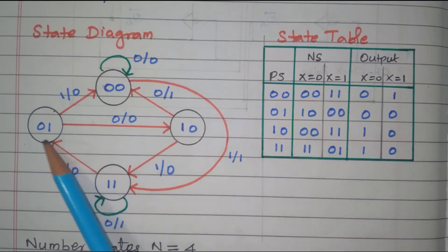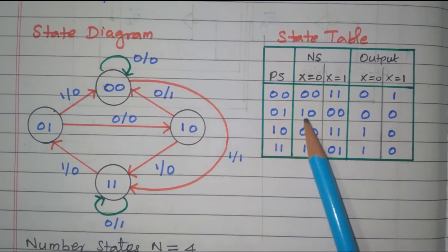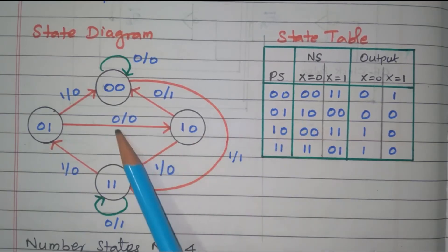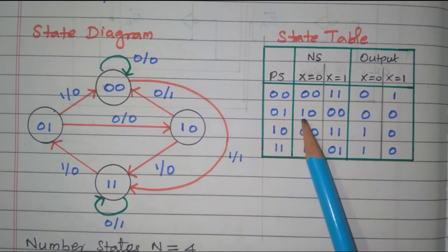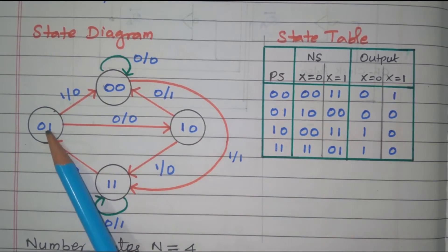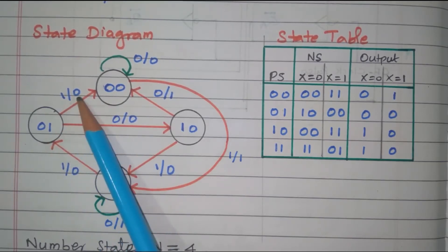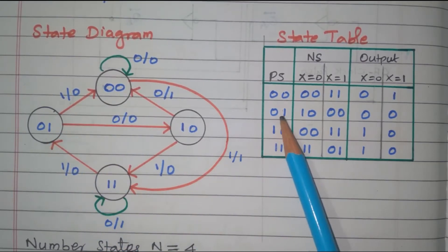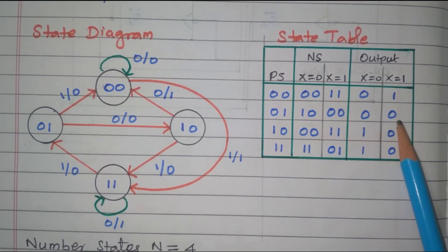Next we take state 01: it goes to 10 with input=0, output=0. And 01 goes to 00 with input=1, output=0.